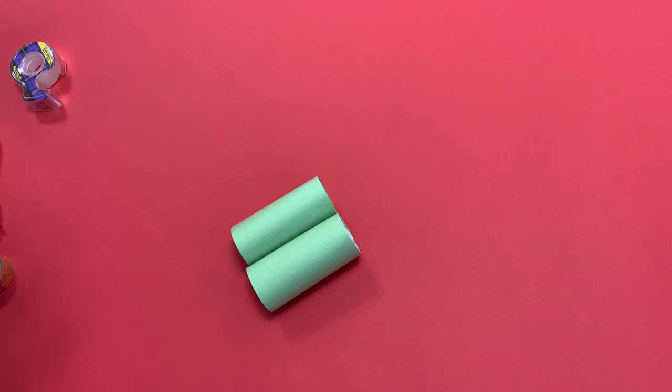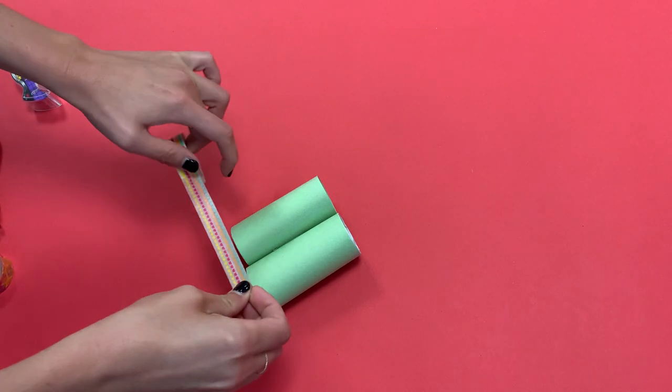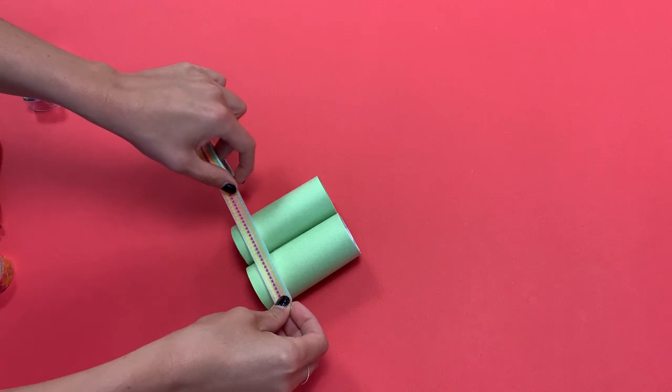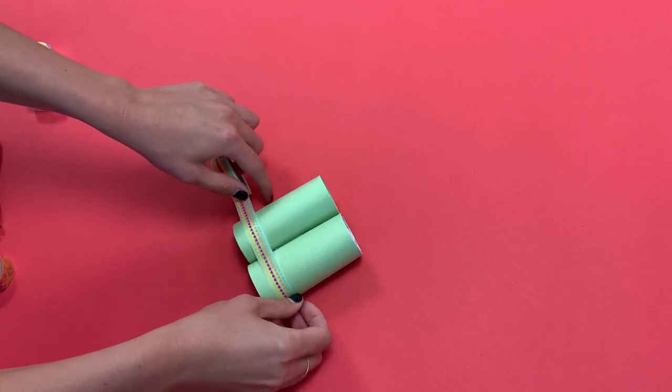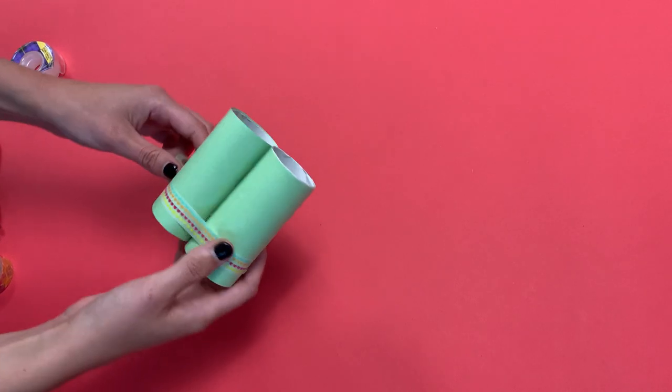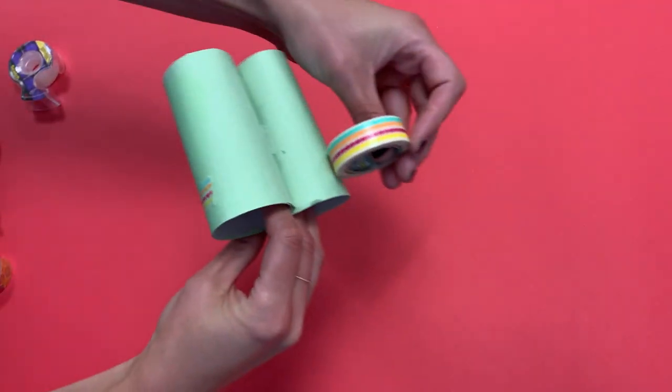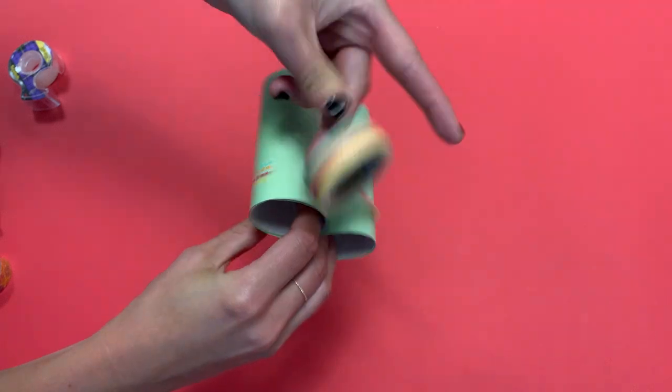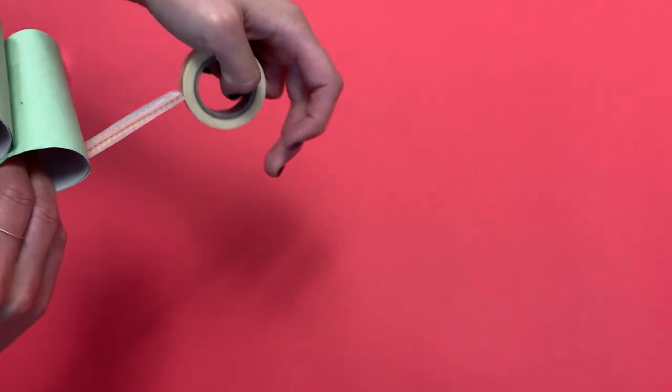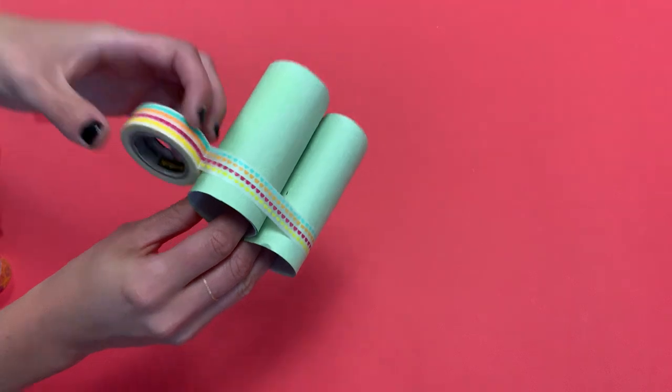So now I'm going to take my washi tape and I am going to tape them on top. This is more so for decorative purposes but it looks really nice. So what you want to do is take your washi tape and leave a little bit from the bottom there. Just leave a little bit of a space. Just put the tape across and pull it all the way around for one long strip.